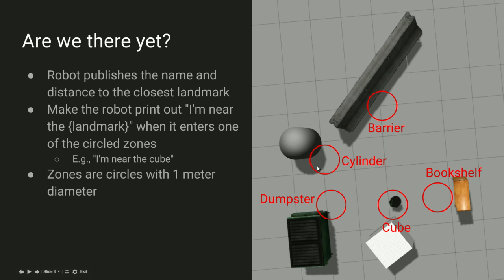We've got the barrier, the cylinder, the dumpster, and so on. And we're just going to define locations like here, here, here, and here, which are just arbitrary locations that are close to each of these objects. And so we'll publish the distance from the robot to each of these all constantly.